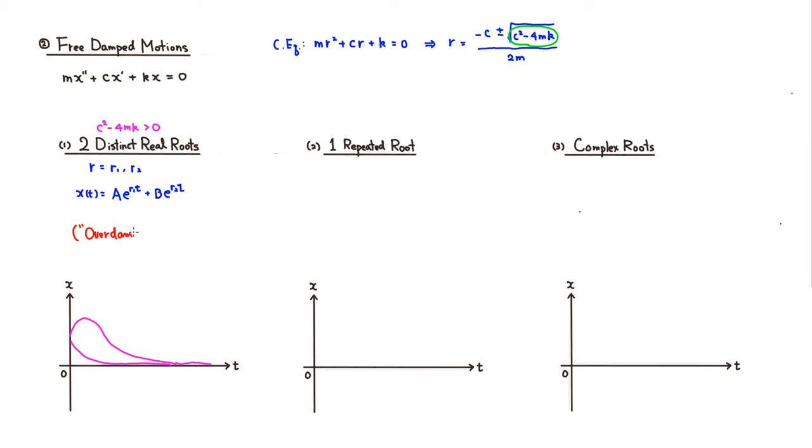This is called the critical case. What happens if you have c squared minus 4mk happens to be exactly equal to 0? Then you get repeated roots, so r is repeated twice. So we know that the solution is going to look like this. So x of t is going to look like, remember that it's going to be a plus b times t e to the rt.